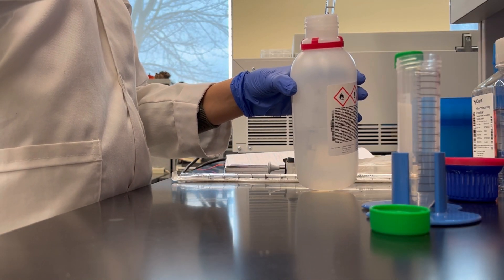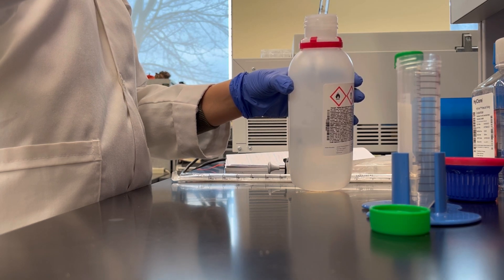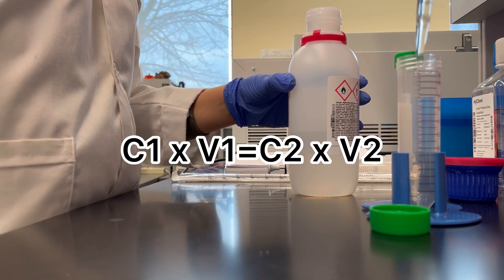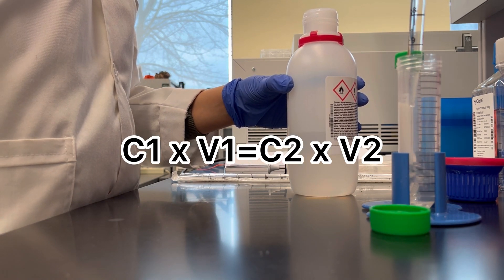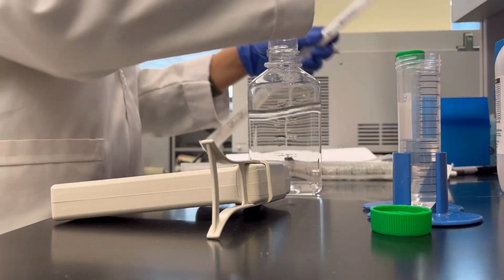In the following steps we need to wash the RNA 3 times with 75% ethanol. Using this equation we will see how much pure ethanol and sterile water we'll need to do so.